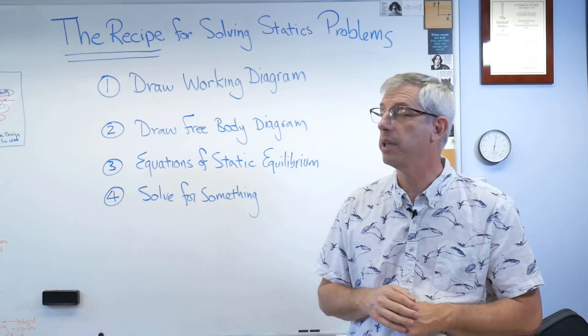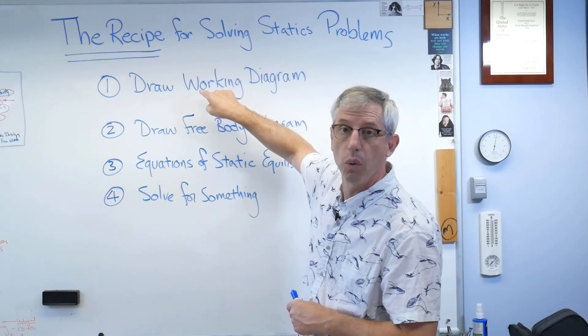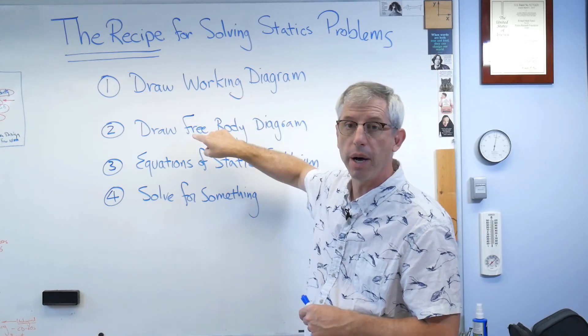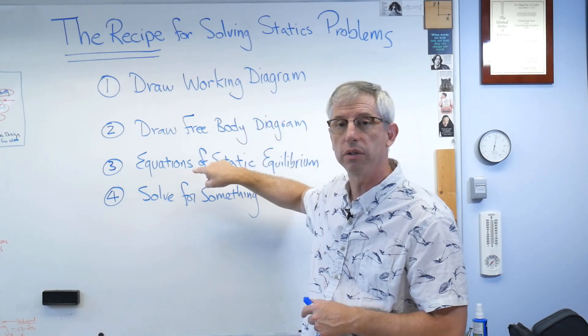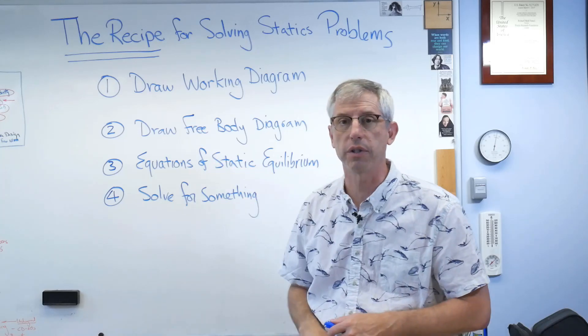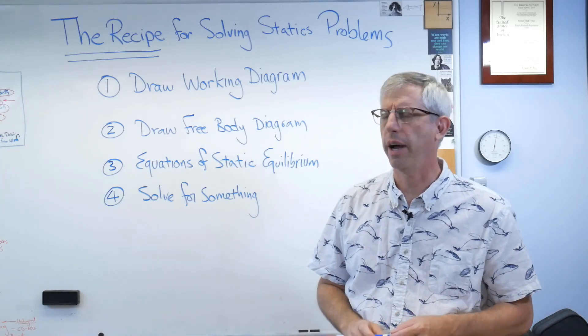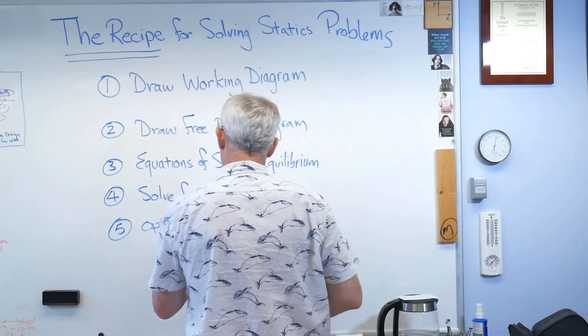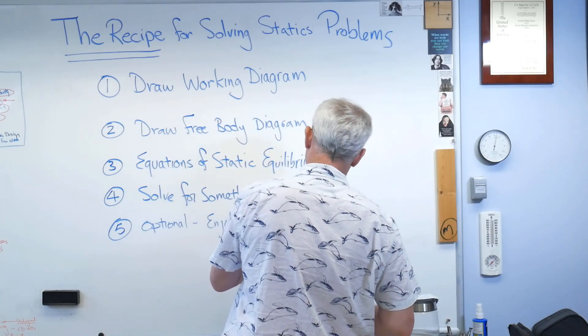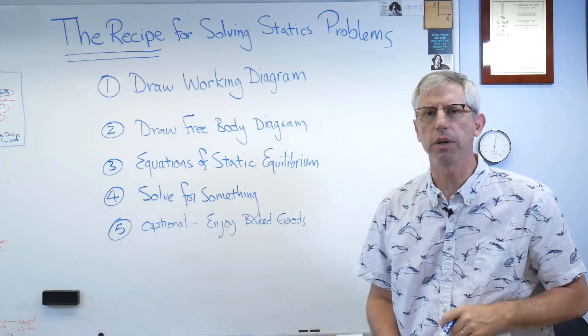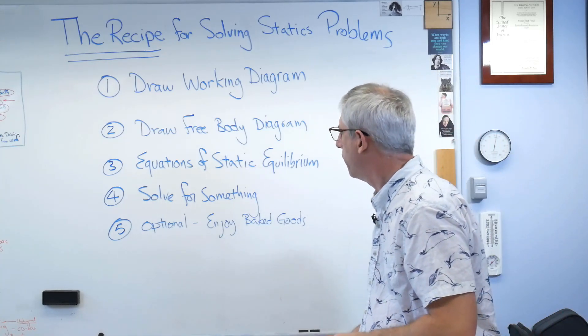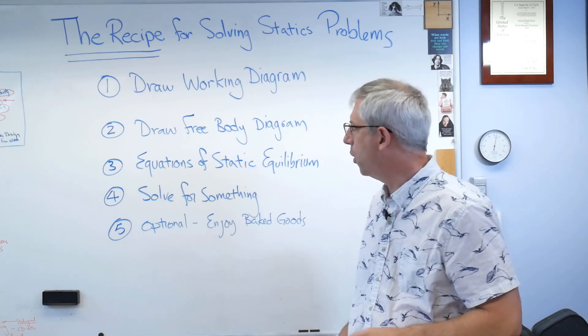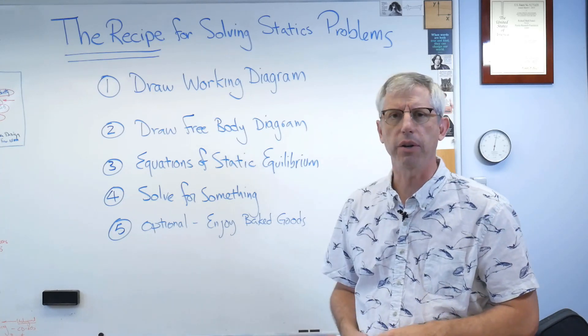So those are the four mandatory steps. Just to go over them again: working diagram, free body diagram, write your equations of static equilibrium, and then solve for something. What's step five? Five is optional. If you go through all this and you get the right answer, you deserve a cookie. So this is optional, only if it's appropriate for you. Enjoy baked goods.